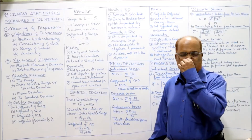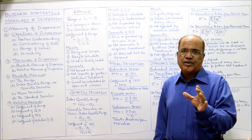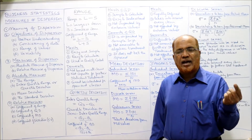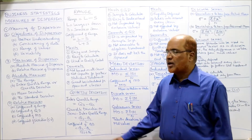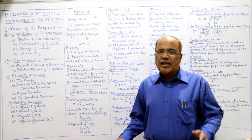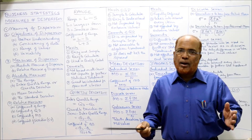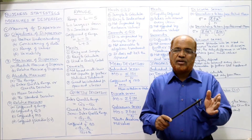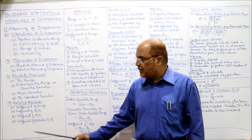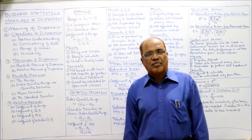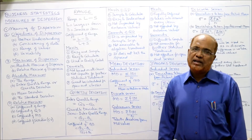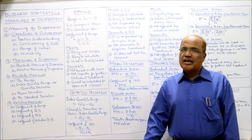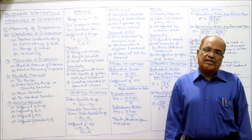These are the relative measures of dispersion. Remember, if it is single data, we use an absolute measure. If we want to compare the variability of one group with another group, it is better to calculate the relative measure of dispersion. Now, one by one, we will study each technique.